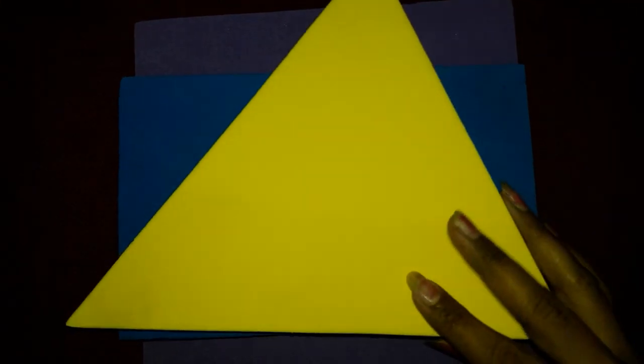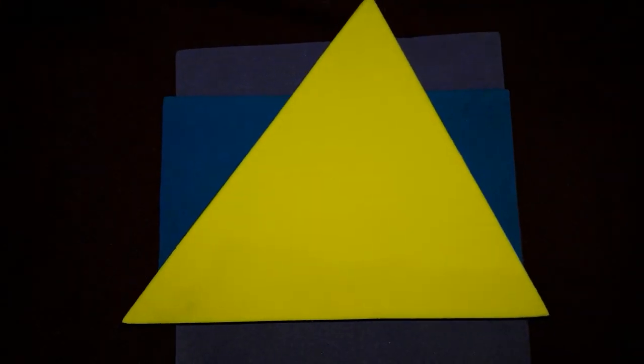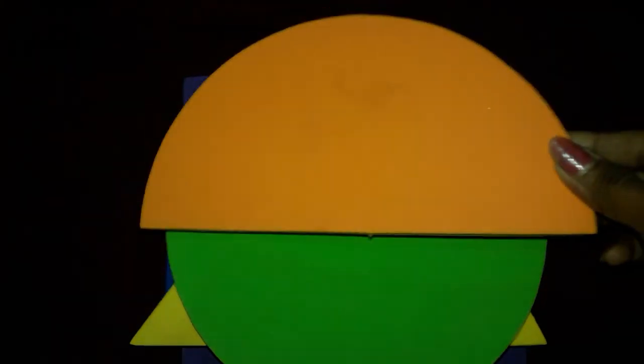So students, aaj hum ne kiske baare mein discussion kiya? Shapes ke baare mein. First is square. Second is rectangle. Third is triangle. And fourth one is circle. Fifth is semicircle.